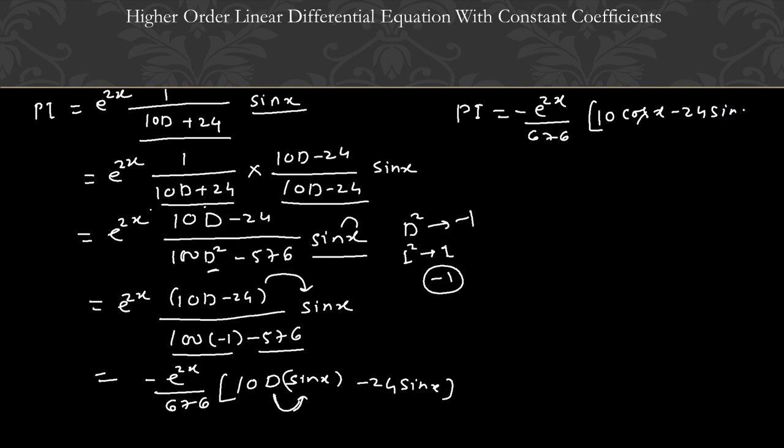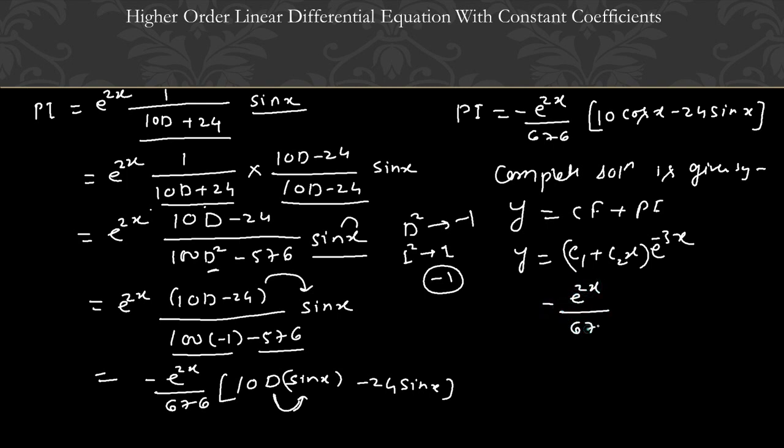Now we write the general solution. Complete solution is given by: y equals CF plus PI. So CF with roots minus 3, minus 3 is (c1 plus c2 x) e to the power minus 3x. And PI is minus e to the power 2x upon 676 times (10 cos x minus 24 sin x). This is the complete solution.